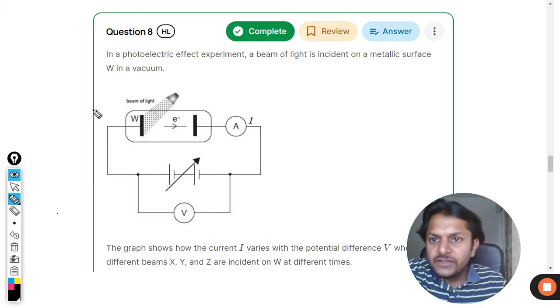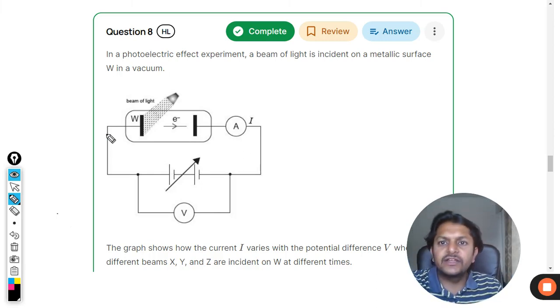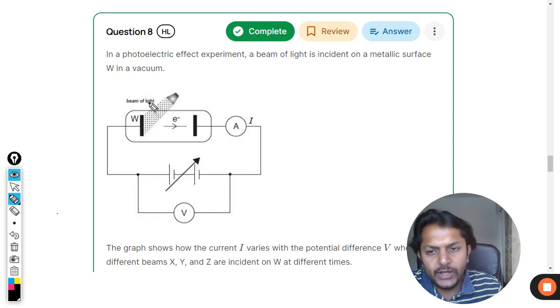Okay, dear student, let us see what is there in this question. In a photoelectric effect experiment, a beam of light is incident on a metallic surface W in a vacuum. So this is just a photoelectric arrangement, no problem.